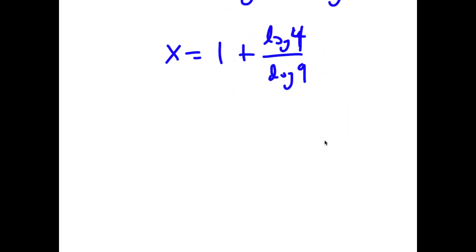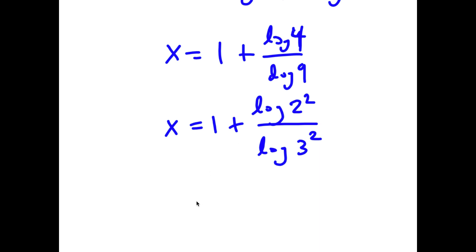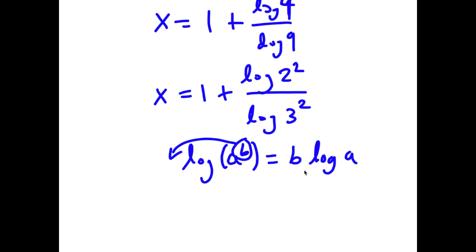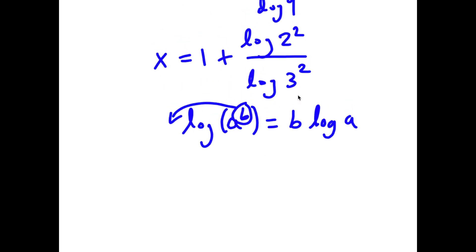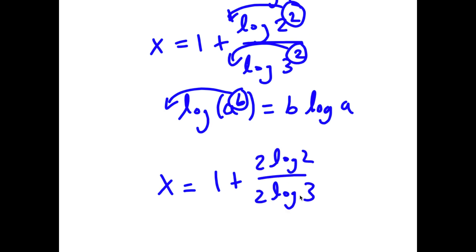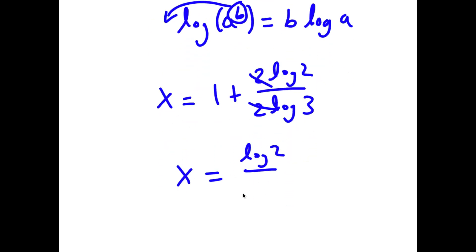I can rewrite log 4 as log of 2 squared, and I can rewrite log 9 as log of 3 squared. Remember, if I have something in the form log of a to the power of b, I can move b to the front — so this equals b times log a. Moving the 2s to the front for both, I have x is equal to 1 plus 2 log 2 over 2 log 3. Canceling the 2s gives x is equal to 1 plus log 2 over log 3.